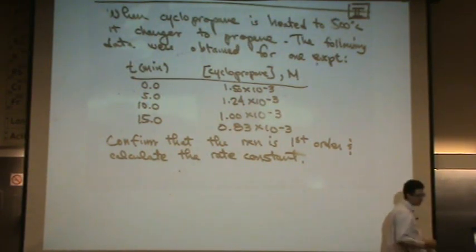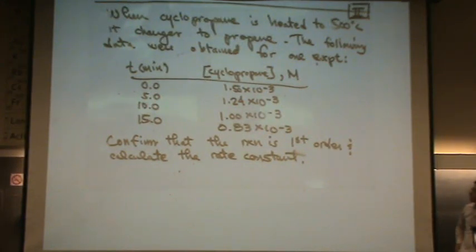When cyclopropane is heated to 500 degrees Celsius, it changes to propene. The following data were obtained for one experiment.